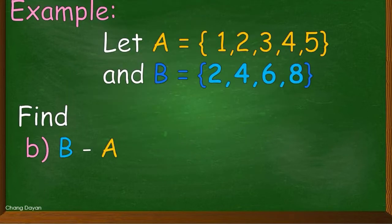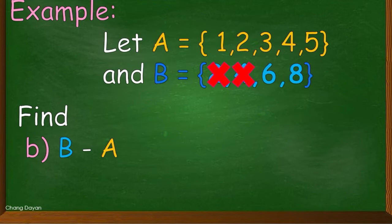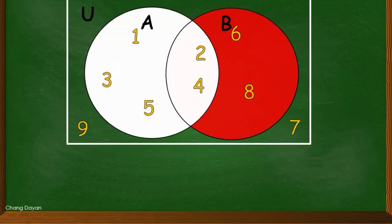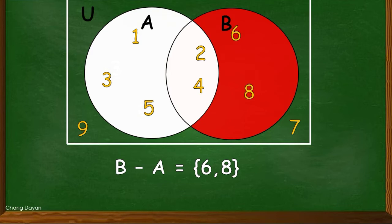Let us find out B minus A — the difference between B and A. Since 2 and 4 are present in set A, we deleted these two. And our answer is 6, 8. Now let us have this Venn diagram. So B minus A is equal to 6, 8. The region where 6 and 8 are located must be shaded.